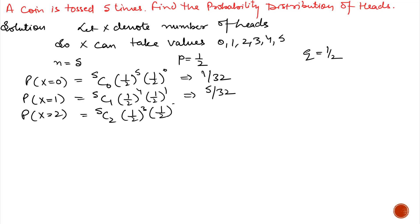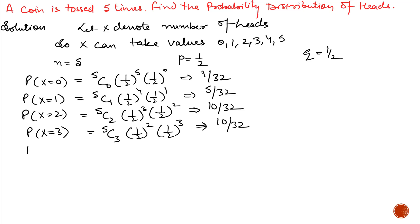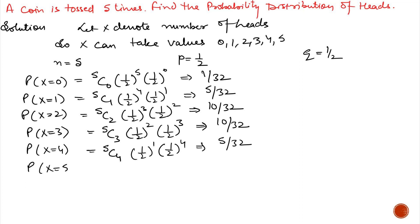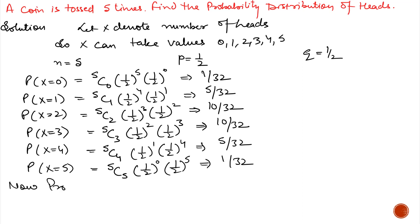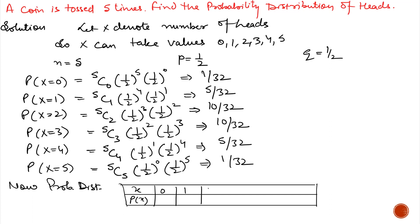For example, probability of X equal to 3 is 5C3 multiplied by 1 by 2 raised to power 2 and 1 by 2 raised to power 3, which equals 10 by 32. Similarly, probability of X equal to 4 is 5C4 multiplied by 1 by 2 raised to power 1 and 1 by 2 raised to power 4. Probability of X equal to 5 is 5C5 multiplied by 1 by 2 raised to power 0 and 1 by 2 raised to power 5, which equals 1 by 32. Rewriting all values in a table, the probability distribution is: X = 0, 1, 2, 3, 4, 5 with respective probabilities 1 by 32, 5 by 32, 10 by 32, 10 by 32, 5 by 32, and 1 by 32. The sum of all probabilities always equals 1.